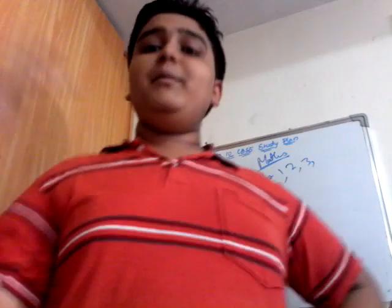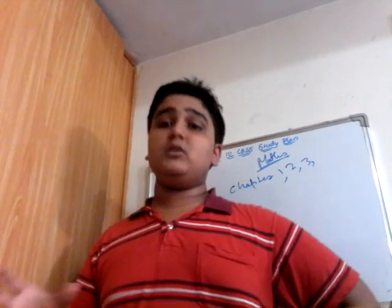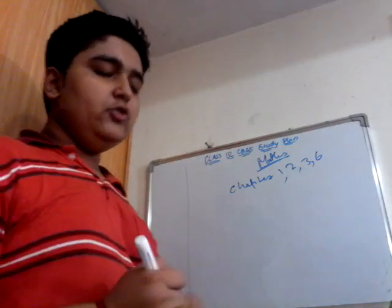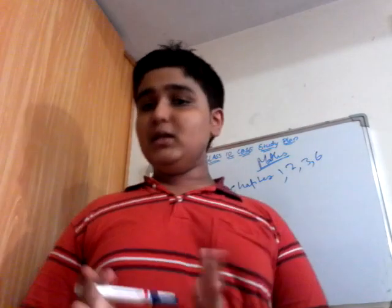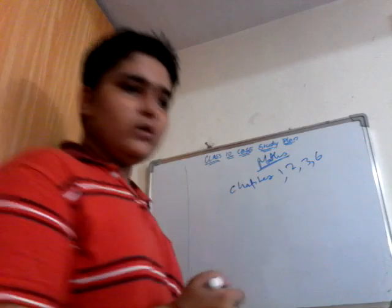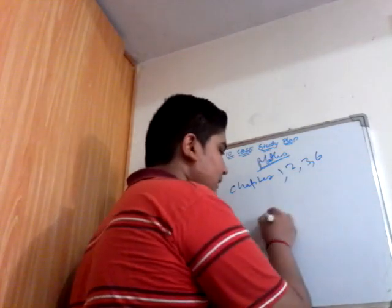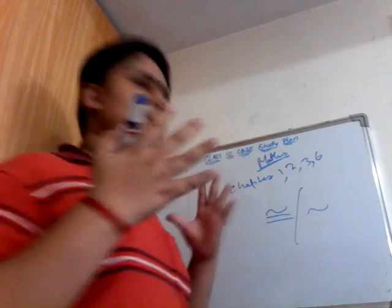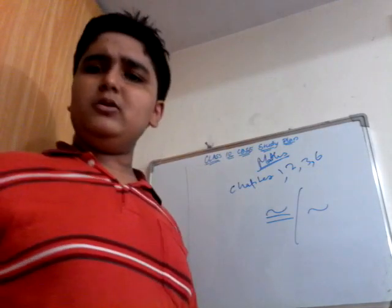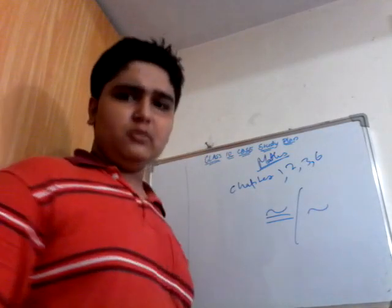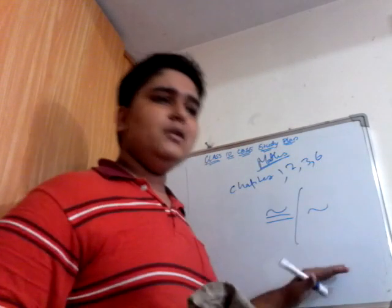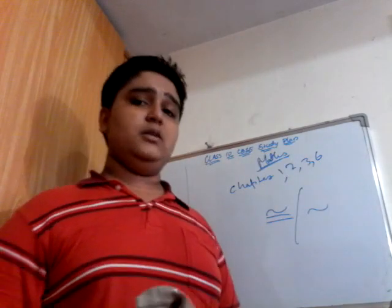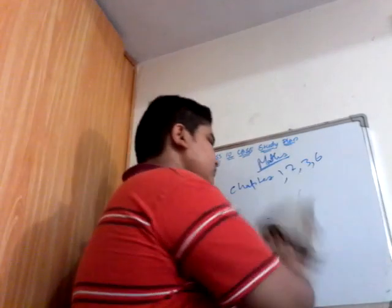In maths, first start with Real Numbers — that's Chapter 1. After that, go with Polynomials, then Chapter 3. These three are in algebra, and I prefer you start with algebra first because algebra plays a role in every single part of maths. Once you complete these three chapters, you've done enough algebra for the time being.